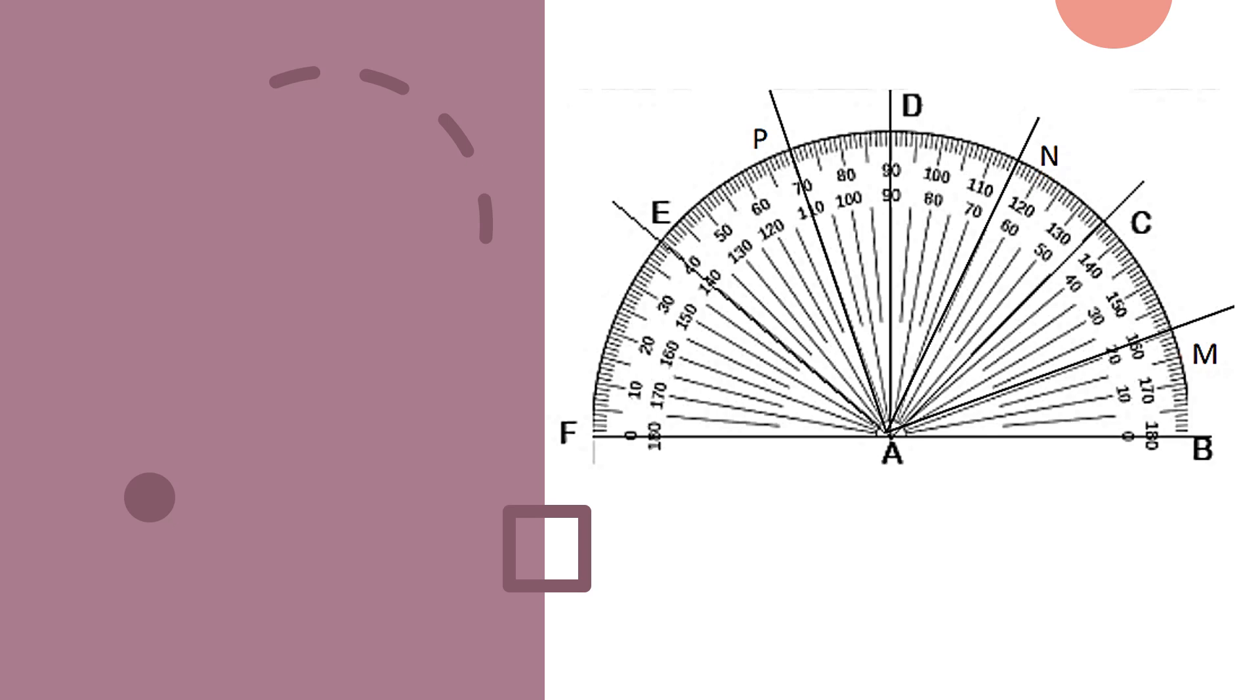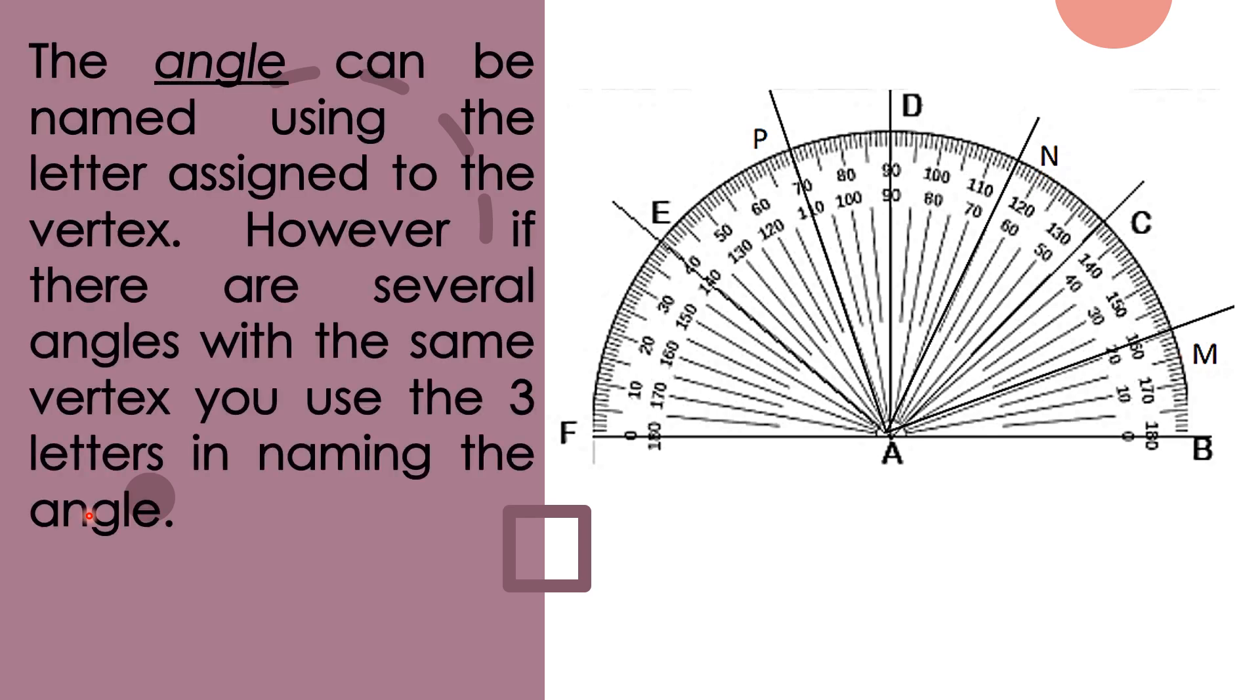So we have here a given protractor with different letters or rays of an angle. The angle can be named using the letter assigned to the vertex. The vertex in this protractor is letter A. However, if there are several angles with the same vertex, you use the three letters in naming the angle.